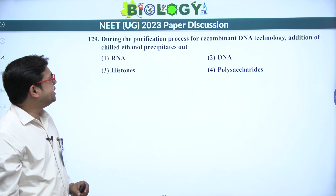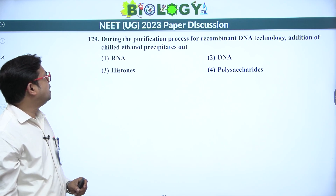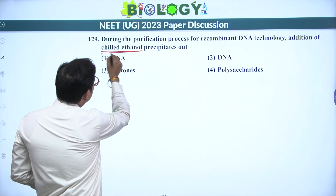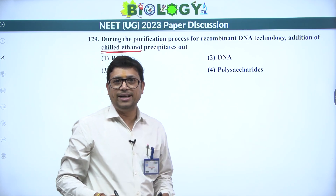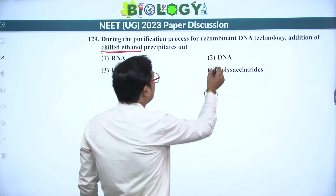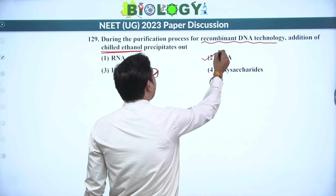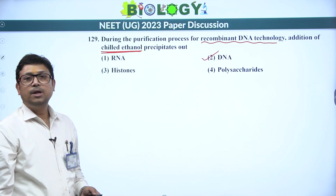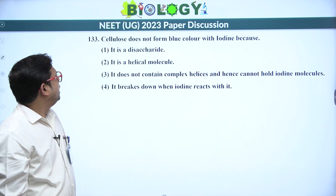Next: during the purification process for recombinant DNA technology, addition of chilled ethanol precipitates what? Chilled ethanol precipitates nucleic acids — DNA and RNA — but since the question specifies recombinant DNA technology, we go with DNA. It is also a direct question; the answer is 2.